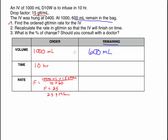How much time remains? The bag was hung at 0400 and I come back at 1100, so 6 hours have passed. Between 0400 and 1100, 6 hours have passed. Which means 10 minus 6 equals 4 hours remaining. So 600 milliliters needs to infuse over 4 hours.